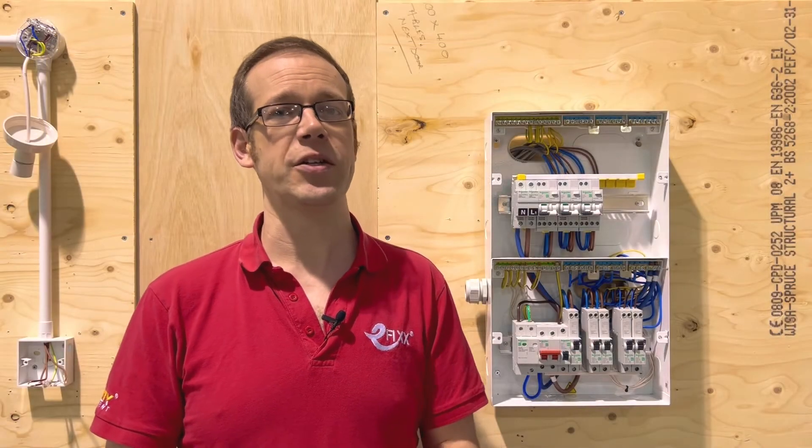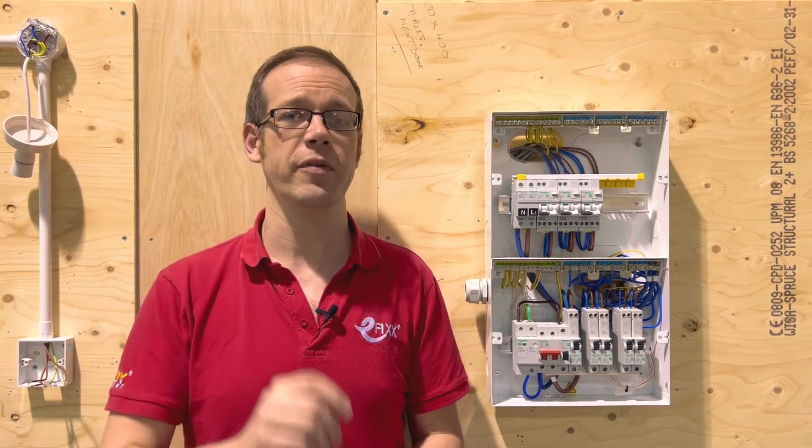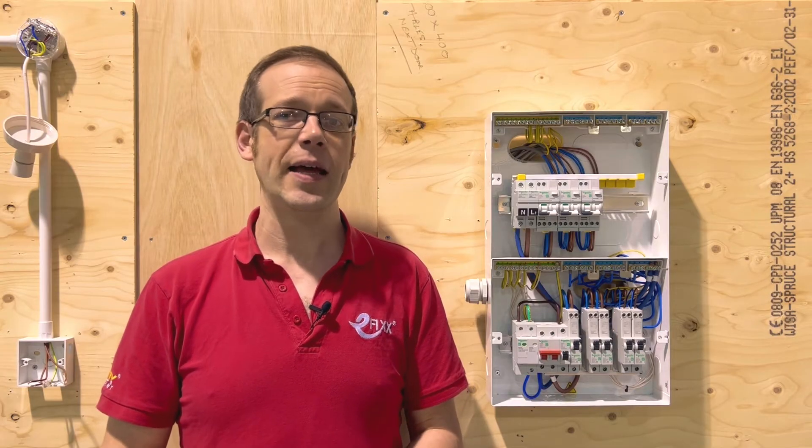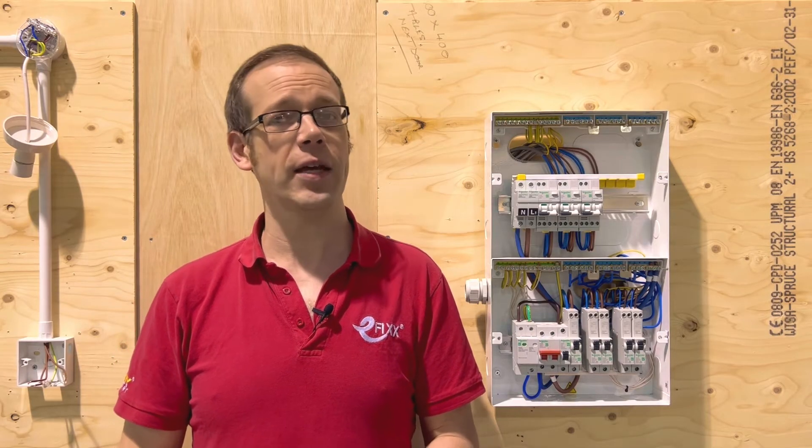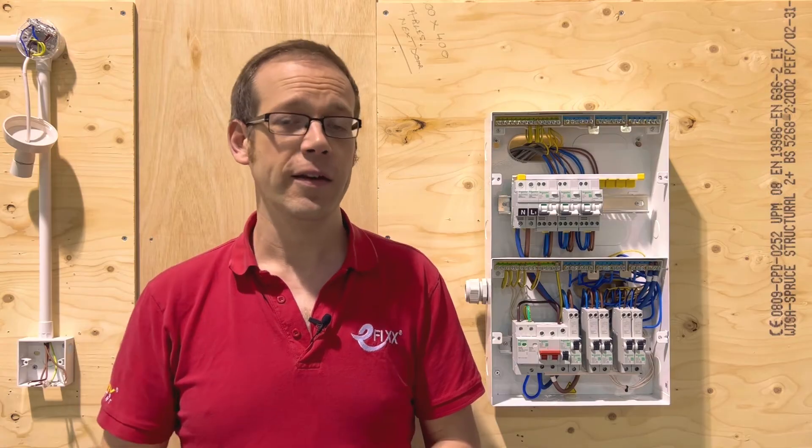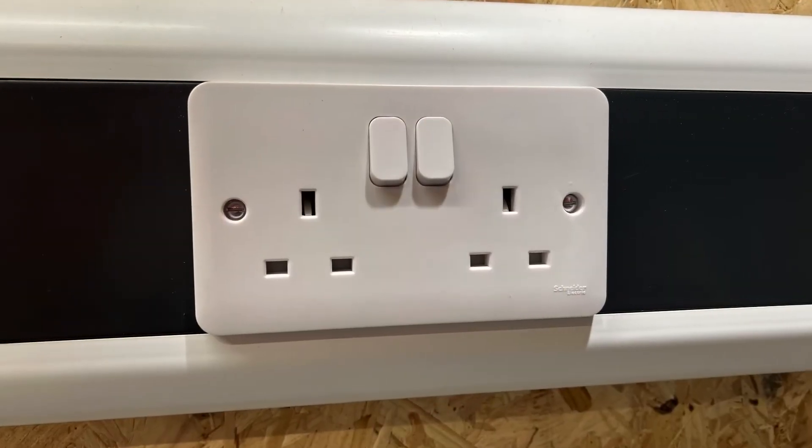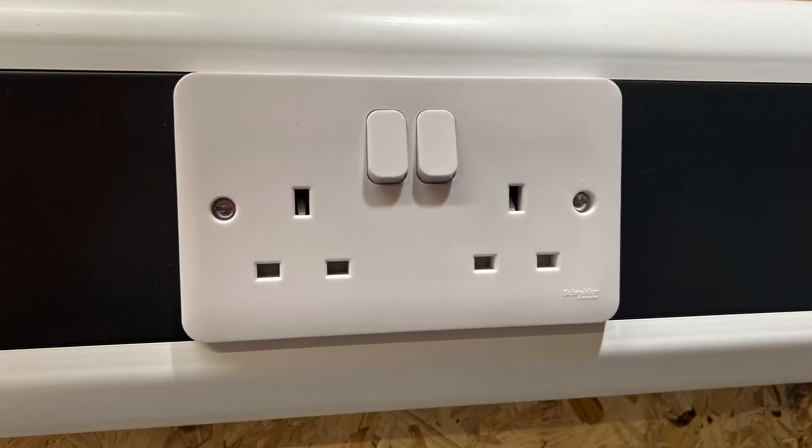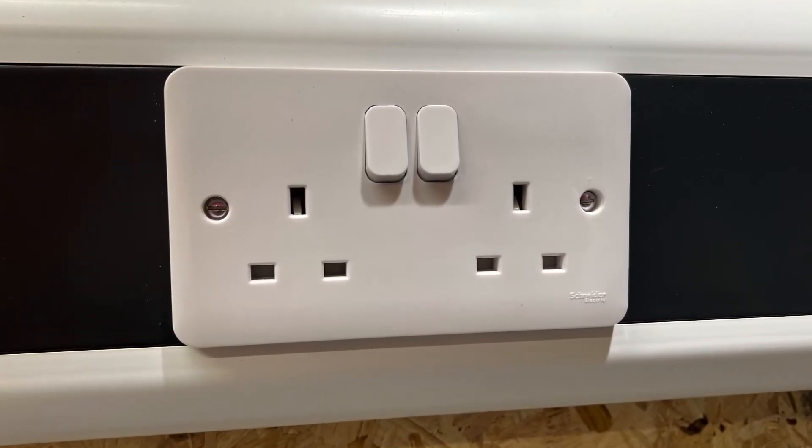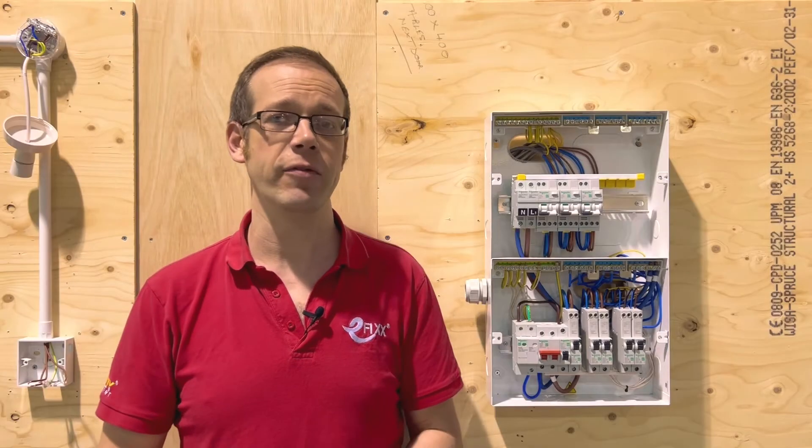So if you're installing circuit protection to these types of properties then you must provide AFDD protection to any single phase circuits supplying socket outlets up to 32 amps in value. So because the standard BS 1363 socket outlet is rated at 13 amps then the circuits feeding them must have AFDD protection in those environments.